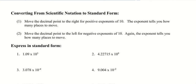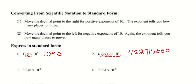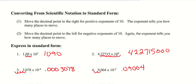So here we're going to expand these numbers back to standard form. For 1.09 times 10 to the 3rd, we move the decimal point 3 spots to the right because the exponent is positive, giving us 1,090. For the next one with the 8th power, we move 8 spots — 4, 2, 2, 7, 1, 5 with three extra zeros. For negative 4th power, we move 4 spots to the left — needing 3 zeros — giving 0.0003078. And for negative 2, we move 2 spots to the left, giving 0.090004.